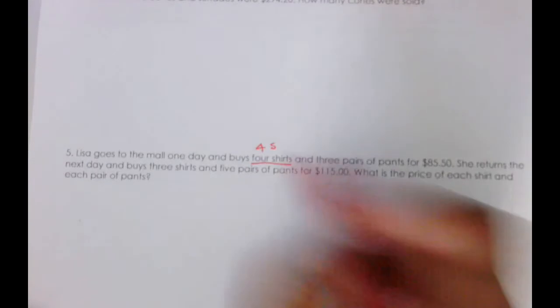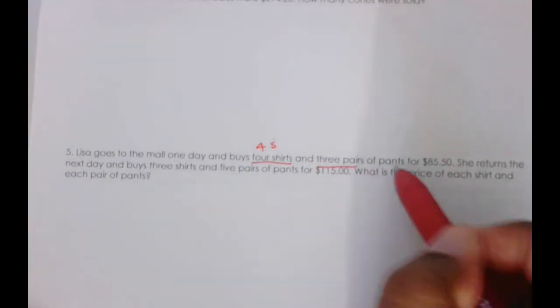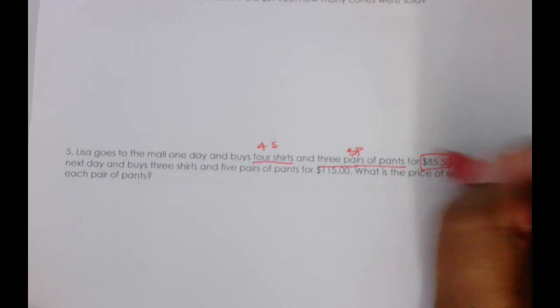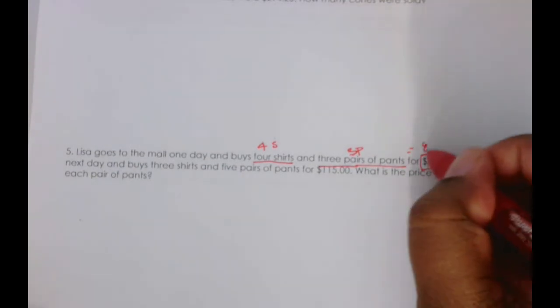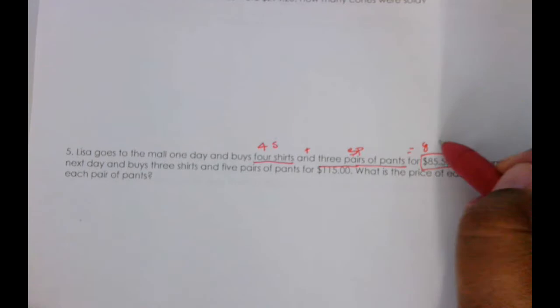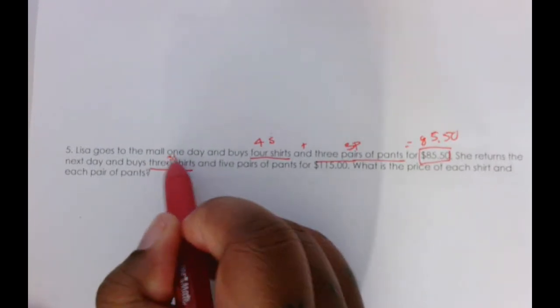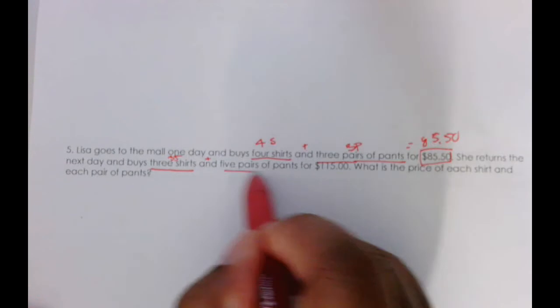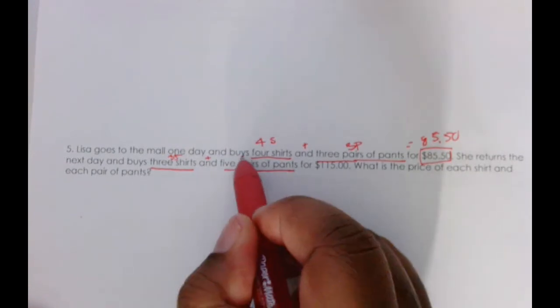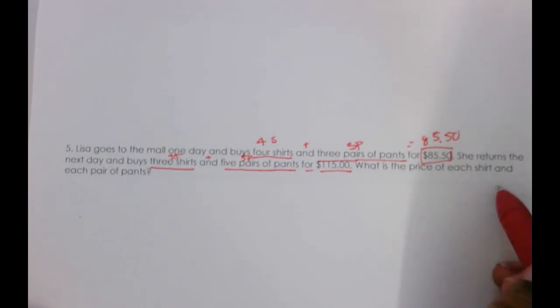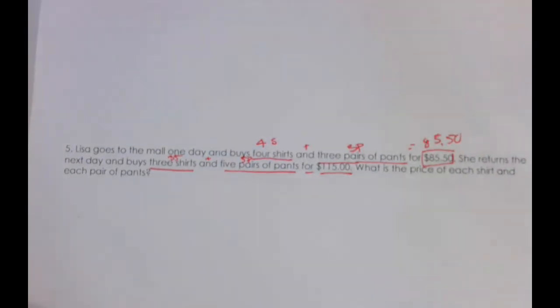And three pairs of pants, we'll call that 3p, and she pays $85.50. So already I have my first equation. She returns the next day and buys three shirts, we'll call that 3s, plus five pairs of pants, we'll call that 5p, for $115. What is the price of each shirt and each pair of pants?